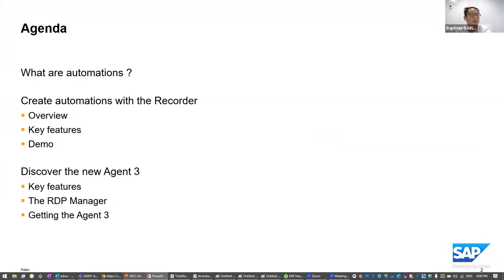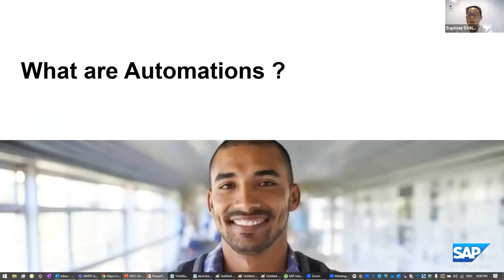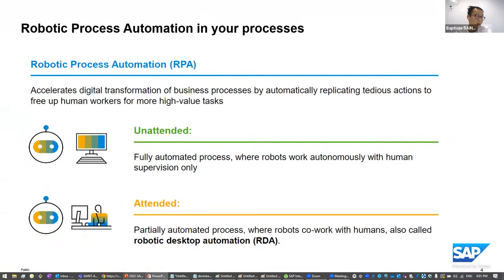During this session, we will see what automations are inside SAP Process Automation. We will see how we can create automations easily with the recorder, and then I will show you the new agent called Agent 3, which is our new desktop agent. So let's start right now — what are automations within SAP Process Automation?